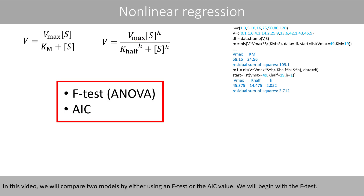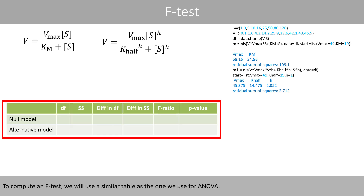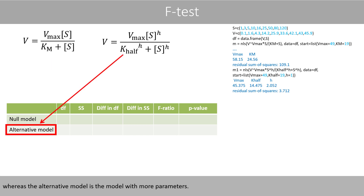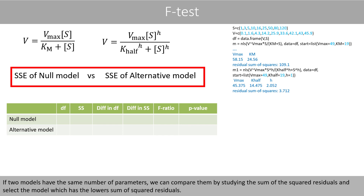In this video, we will compare two models by either using an F-test or the AIC value. We will begin with the F-test. To compute an F-test, we will use a similar table as the one we used in ANOVA. The null model should represent the simpler model out of the two, which is the model with the fewest parameters, whereas the alternative model is the model with more parameters. If two models have the same number of parameters, we can compare them by studying the sum of the squared residuals and select the model which has the lowest sum of squared residuals.